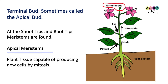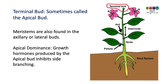Meristems are plant tissue capable of producing new cells by mitosis, and the cells that they produce can become any type of plant cell. Meristems are found at root tips and shoot tips, but they're also found in the lateral or axillary buds — the buds that are growing along the stem, just above where the leaf attaches.